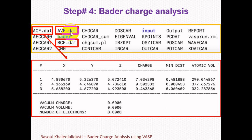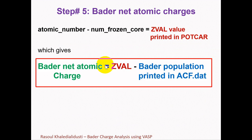The only file important for Bader charge analysis is ACF.dat, and we need the information in the charge column of ACF.dat for further analysis. The last step of the Bader charge analysis is finding the Bader net atomic charges. To calculate the Bader net atomic charges of each atom, we need to subtract the Bader population printed in ACF.dat — the values in the charge column —